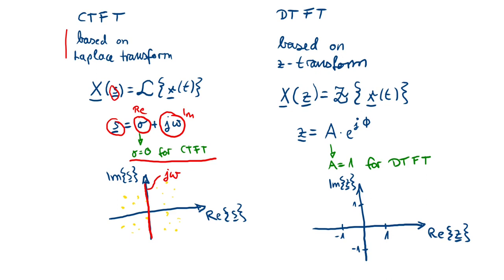The Laplace transform is used to analyze the stability of systems. Since we mostly care about steady-state signals, we set the real part to zero and use the CTFT. Now we have the Discrete-Time Fourier Transform, which is a special case of the Z-transform. Please refer to the lecture notes for further information. The Z-transform also has a complex frequency parameter in polar notation, with the argument being what we have already seen in the DTFT, and the magnitude set to one for the steady-state case.